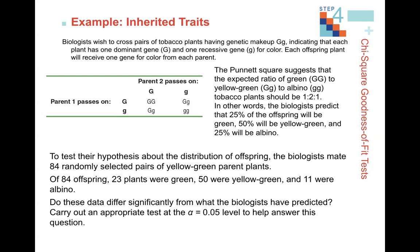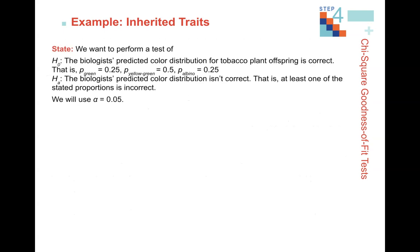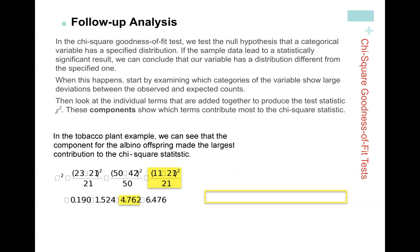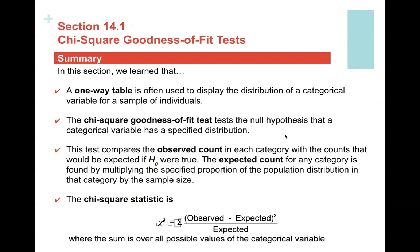Chi-square tests are used a lot in AP Biology, especially in genetics. There's a genetics example in your textbook — you can read through the state, plan, do, conclude steps. When you do get statistically significant results, you must do a follow-up analysis. Your follow-up analysis shows every single one of the components and identifies which component had the greatest impact — greatest contribution — to the chi-square test statistic.